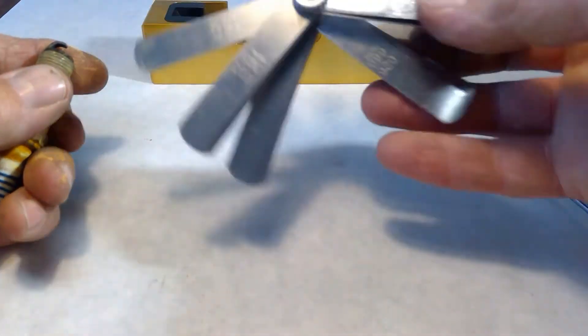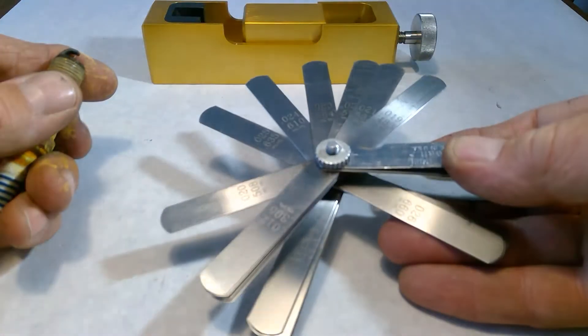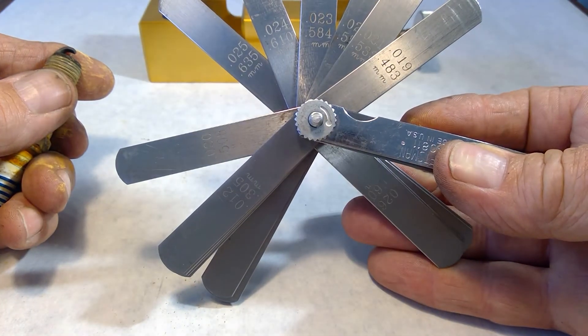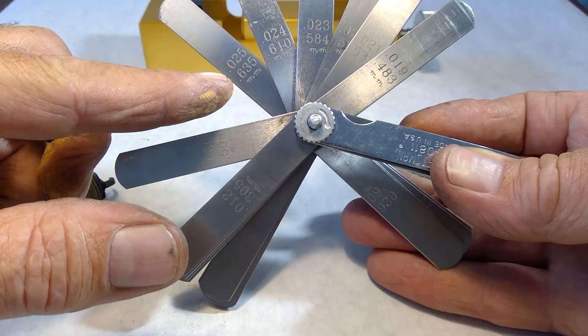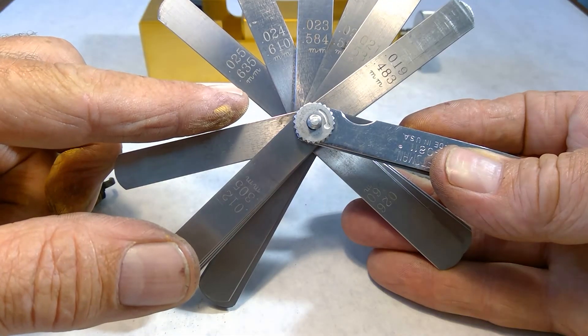I can also measure using feeler gauges. And I know it's kind of hard to see the numbers there, but each one of those feeler gauges has a measurement on it. 25 thousandths, 0.635 millimeter.